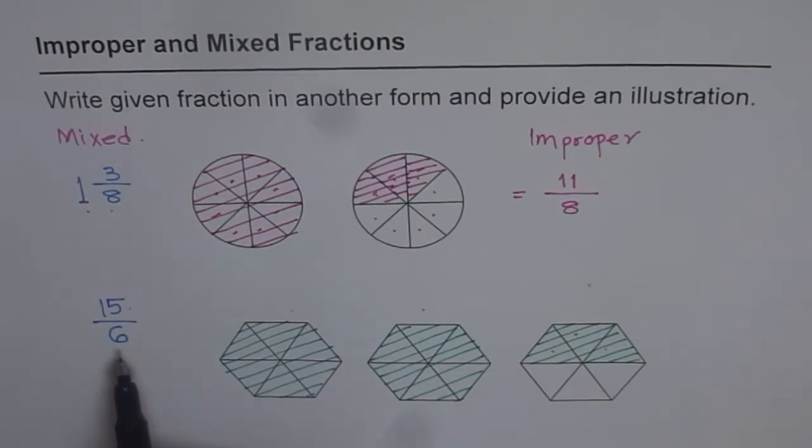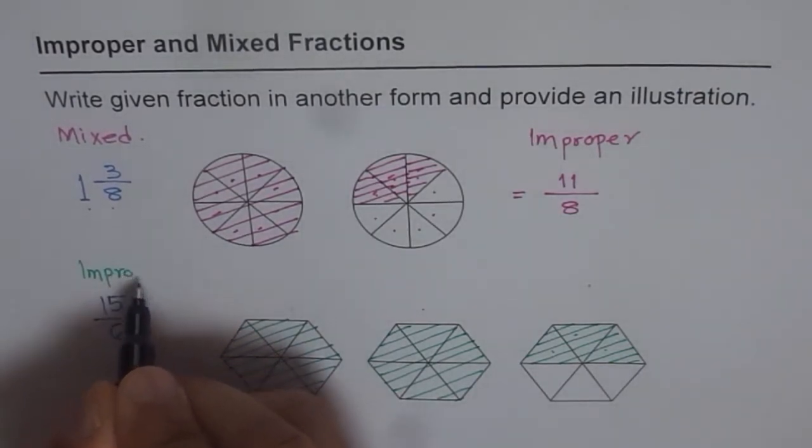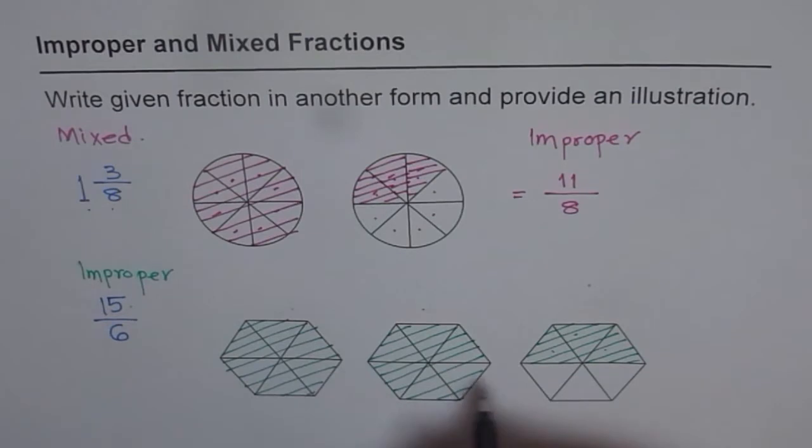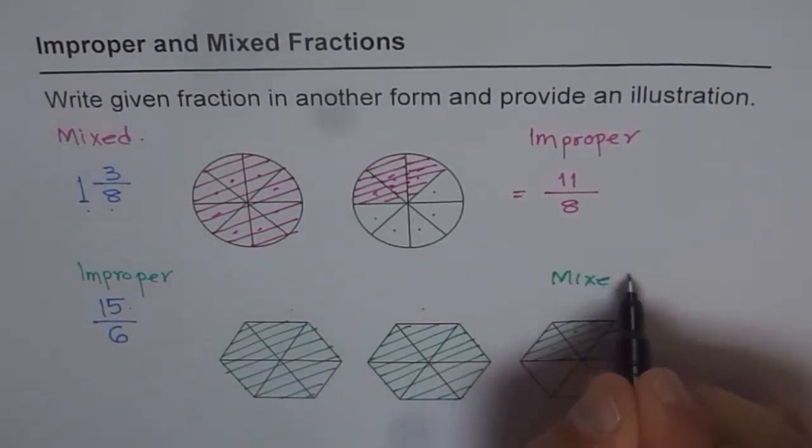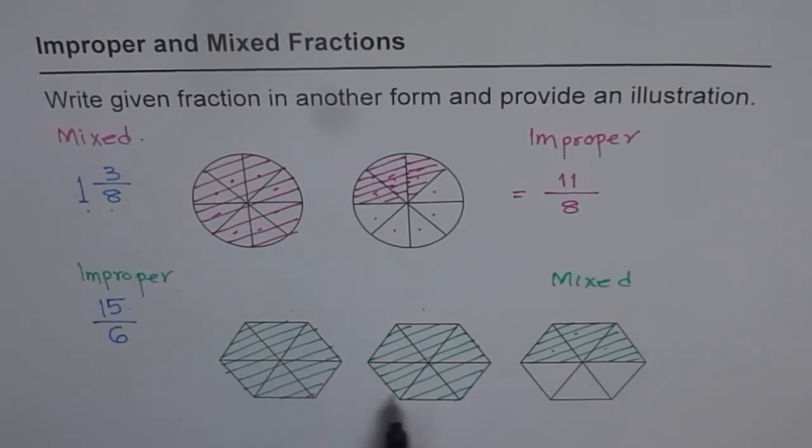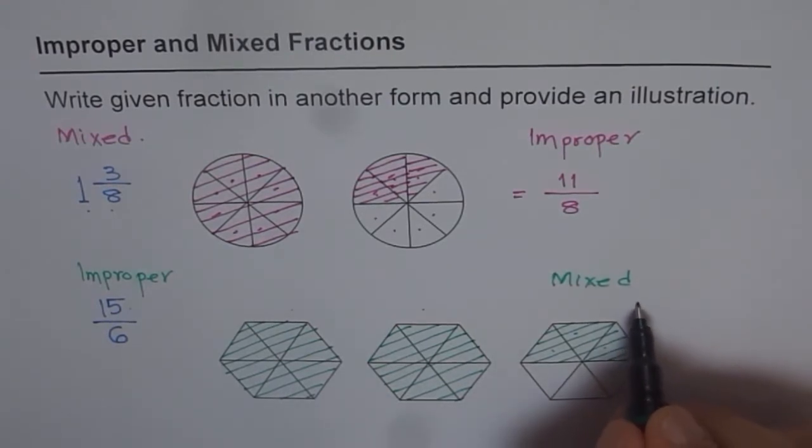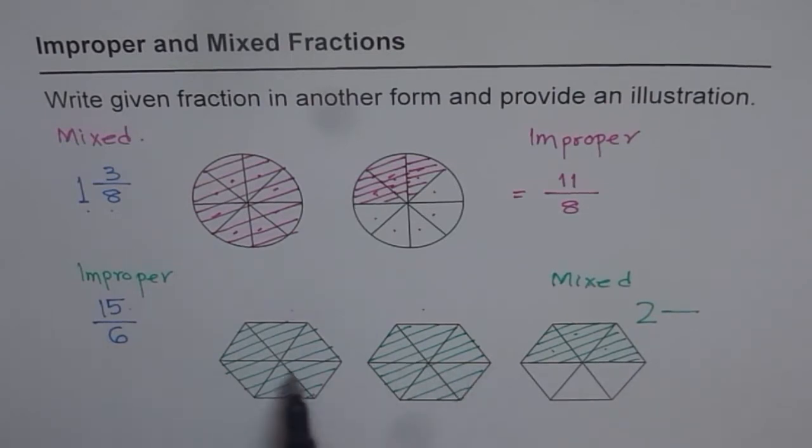Which form is this? This is improper. So this is improper. And we will write it in mixed form. Can you tell me how to write this in mixed form? 2 wholes. So we will write this in 2 wholes.